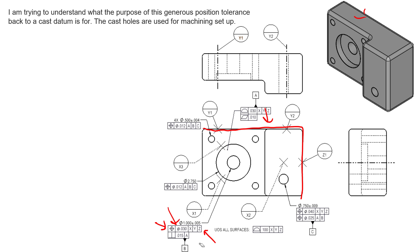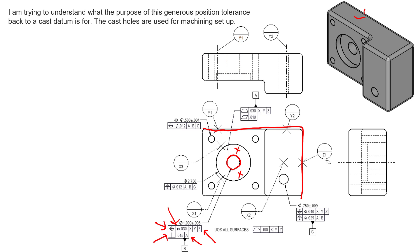Then, for the through hole, we don't really care too much about its position back to the cast outside surfaces — there's enough room in the tolerance calculations and enough material in the casting to have a relatively loose location. So we give manufacturing that option: a loose reference back to X, Y, and Z. But what we really care about is that when this hole is made, it must be perpendicular to this surface because that's how it will function. We don't necessarily care if the hole is perpendicular to the cast surface, because we have a lot of room there.